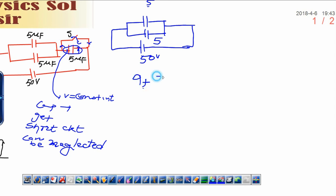Then, final charge I can write after closing the switch. That is, 50 into 10. 5 plus 5, 10. That is, 500 microcoulomb.